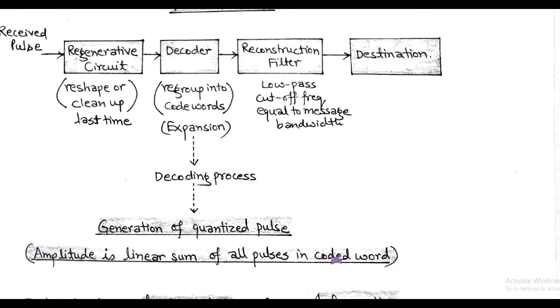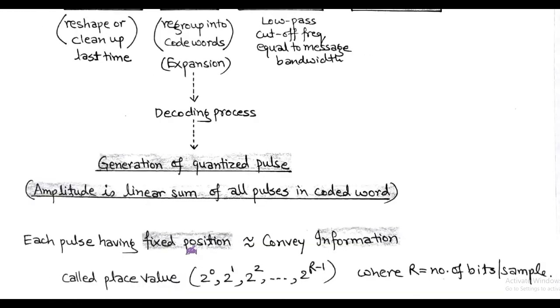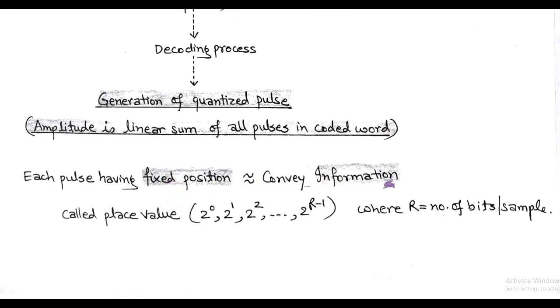Since each pulse has its own fixed position that conveys information, and this is called place value. In PCM, place value is defined as 2^0, 2^1, 2^2, up to 2^(r-1), where r is the number of bits per sample.